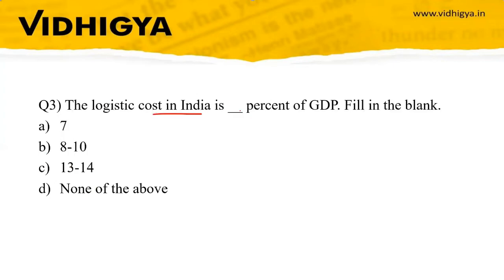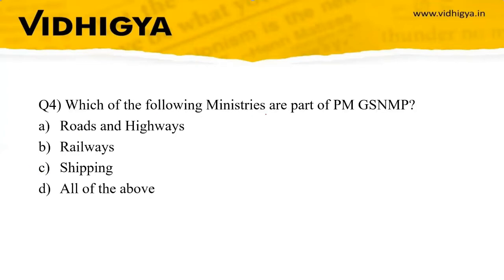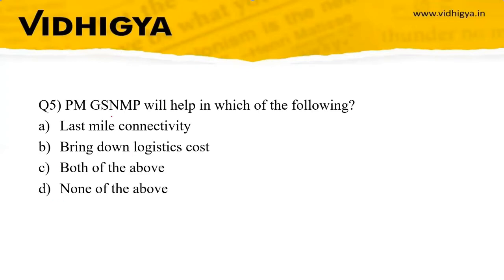Question 3: The logistics cost in India is how much percent of GDP? Options: 7%, 8–10%, 13–14%, none of the above. The correct answer is 13 to 14 percent of GDP. Question 4: Which ministries are part of PM Gati Shakti? Options: Roads and Highways, Railways, Shipping, all of the above. The answer is all of the above. Question 5: PM Gati Shakti National Master Plan will help in — last mile connectivity, bringing down logistics costs, both of the above, or none of the above? The correct option is both of the above. That is the main objective.